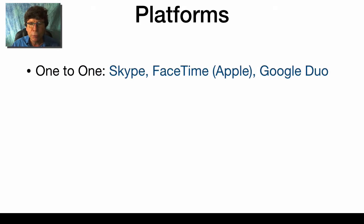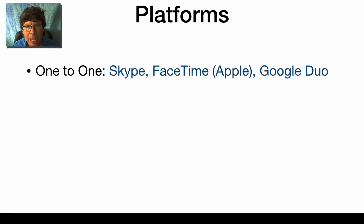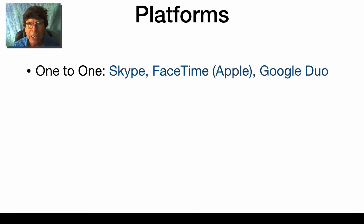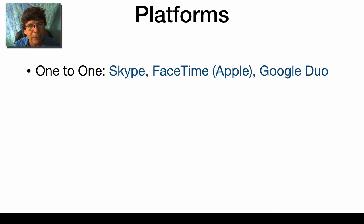Another free resource is FaceTime. If both you and your recipient have an Apple device — an iPhone, iPad, Mac laptop, or desktop — FaceTime is built right into the operating system. If you're connecting with an elderly family member, that may be your best route because there's nothing to sign into, nothing to download or install. It's the easiest way to connect between two parties. The last option I'll briefly mention is Google Duo, which is available for both iOS and Android devices and is also a one-to-one connecting tool.